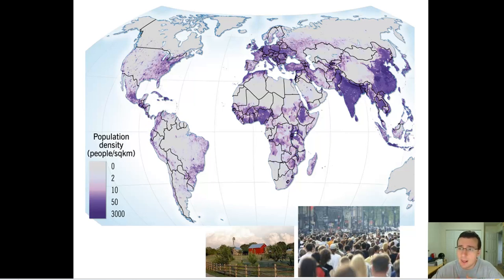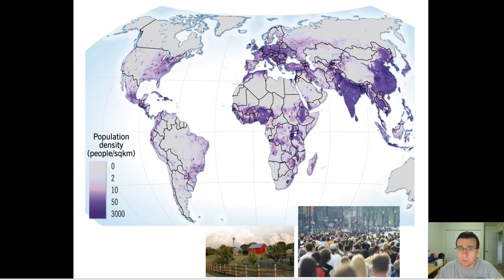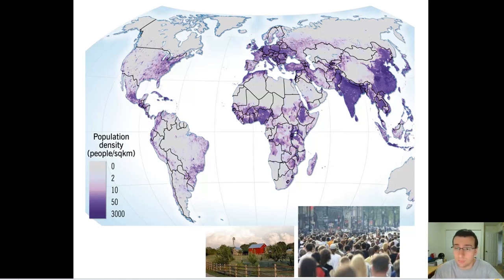That is the idea of density, and it's actually very important for ecologists because they don't just care about how many people are living in a certain area — they care about how packed together those people are. It's not just about birth rates, death rates, or how many people are moving from one place to another, which is called migration. All these things are important for ecologists, and they will also study limiting factors, which may contribute to population growth or decline.